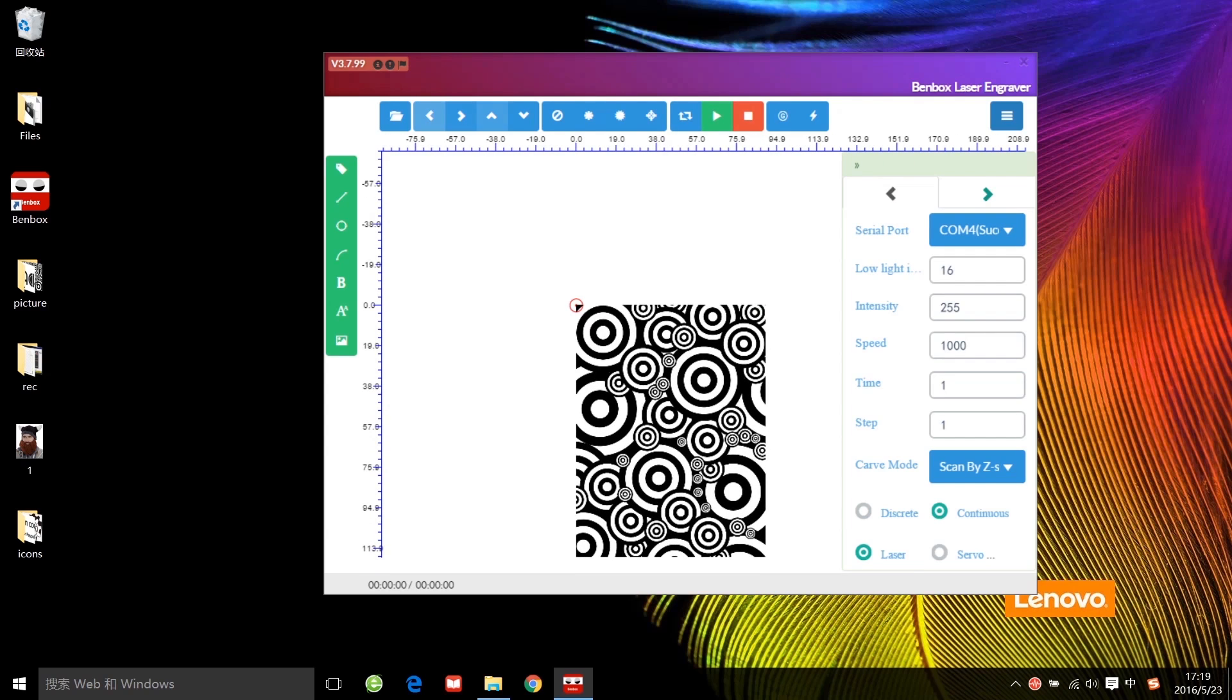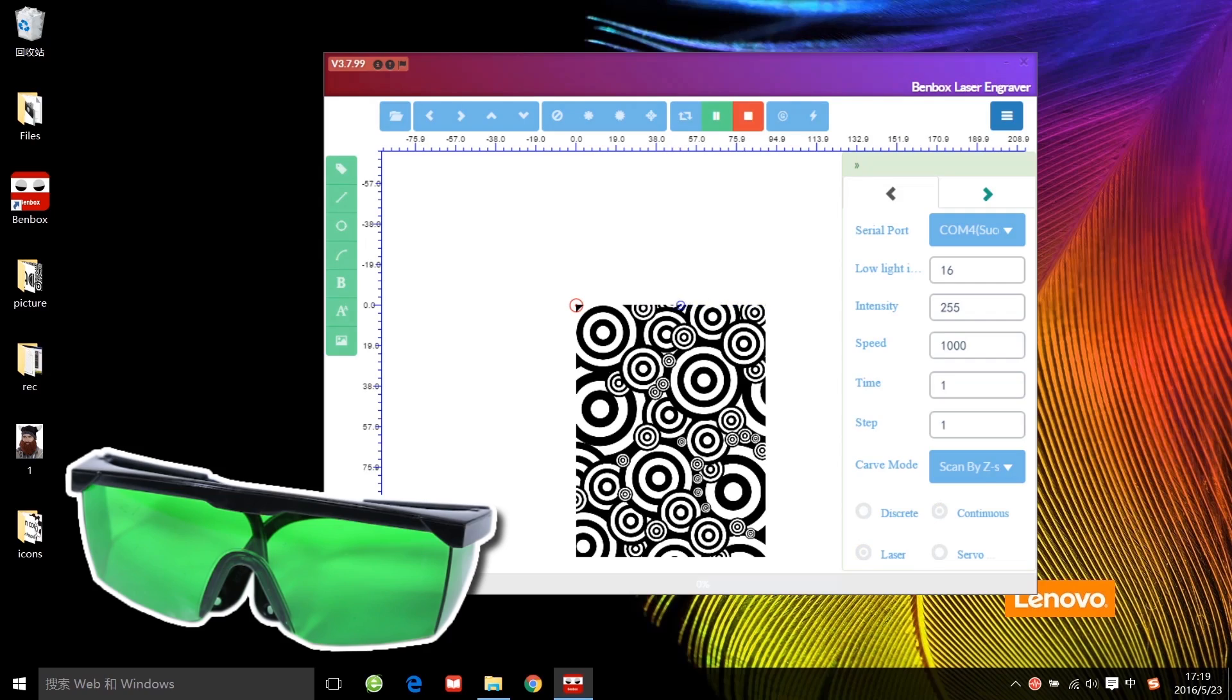Turn on the low light button and adjust the initial position, then turn off. Do not forget to wear your safety goggles first, then start.